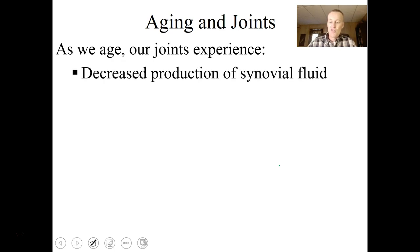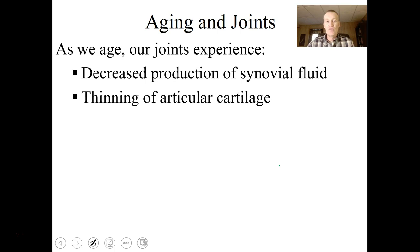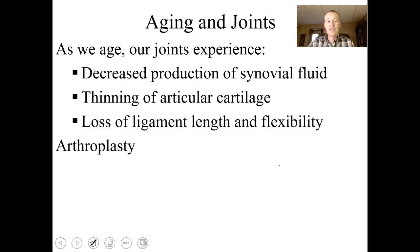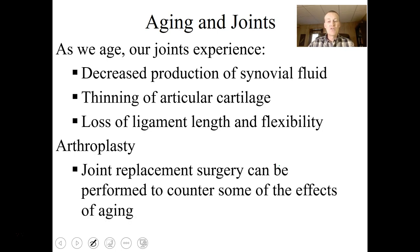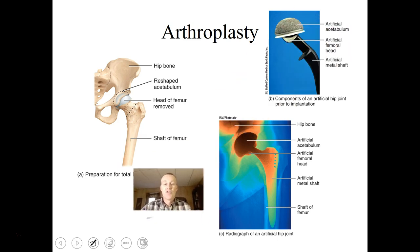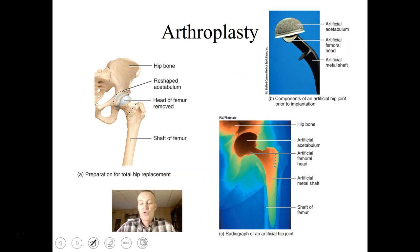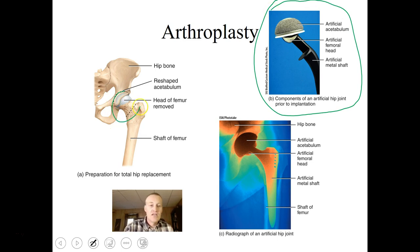When we age, our joints experience decreased production of synovial fluid, thinning of articular cartilage, and loss of ligament length and flexibility — all leading to being stiff, sore, and less able to do the same activities. Joint replacement surgery is called arthroplasty, and it counters some of the effects of aging. Arthroplasty includes total hip replacements, shoulder replacements, or knee replacements — they take an artificial joint, cut and remove the old parts, and insert new parts.